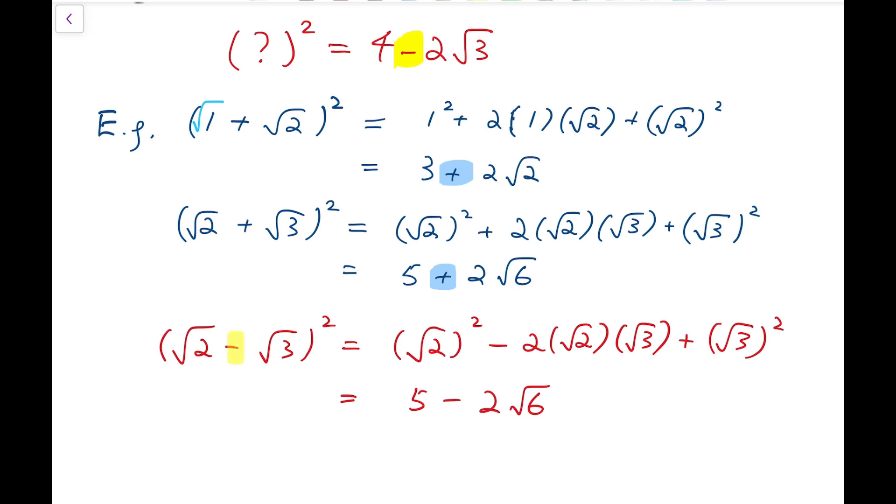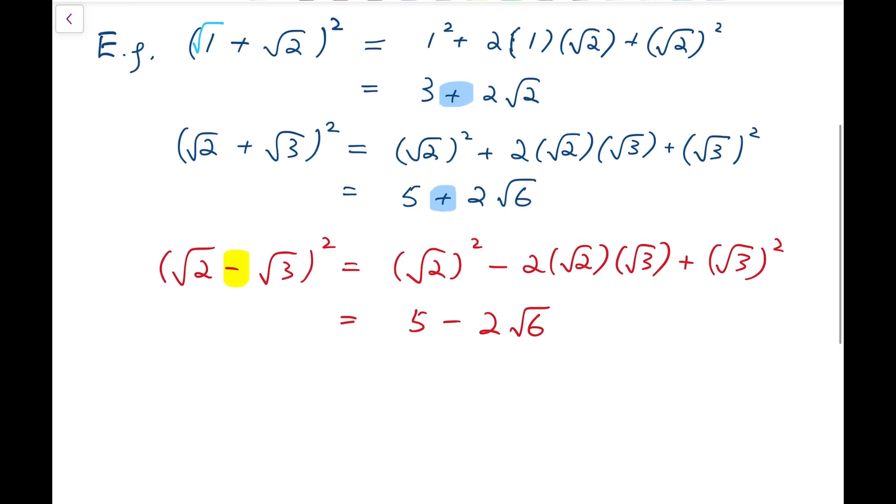So actually to achieve a minus after squaring, we need minus before squaring as well. So from this we can say that square root of 5 minus 2 root 6 should be root 2 minus root 3. But if you take a closer look, you will find that this deduction is actually wrong. Because for the right-hand side, root 2 is less than root 3. So the number here is negative.